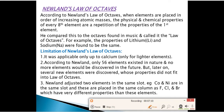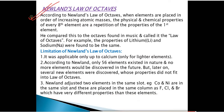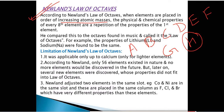After Dobereiner's Triads came Newlands' Law of Octaves. When elements were placed in order of increasing atomic masses, the physical and chemical properties of every eighth element repeated the properties of the first element. For example, if we have elements A, B, C, D, E, F, G, H — the property of H (the eighth element) is similar to A (the first element).